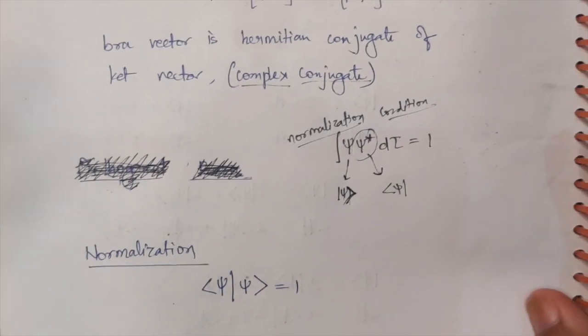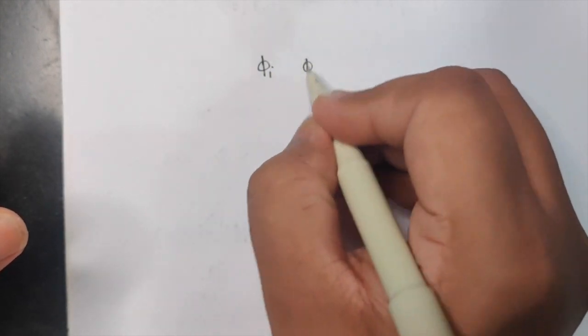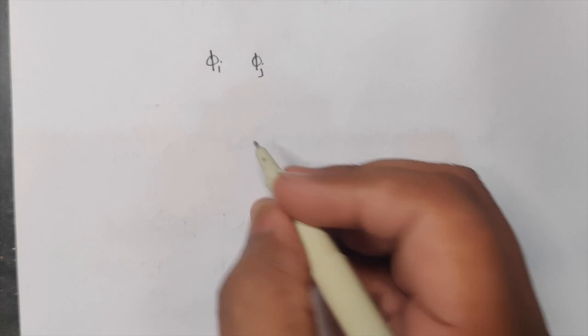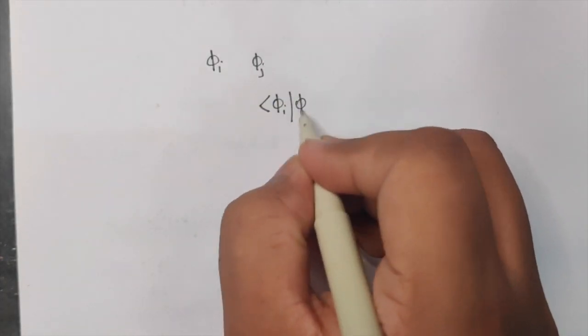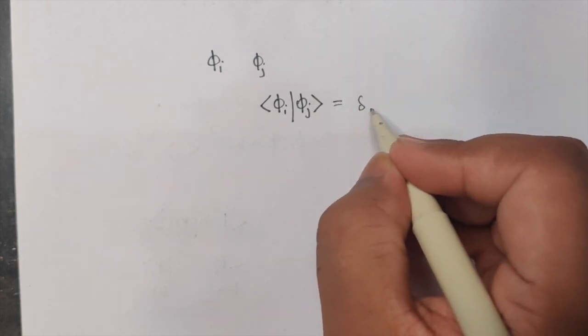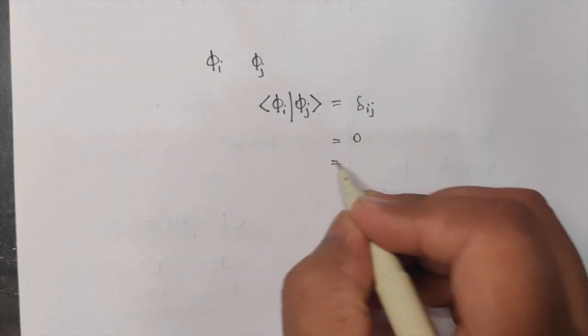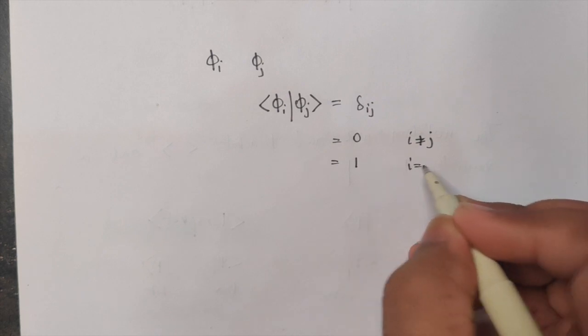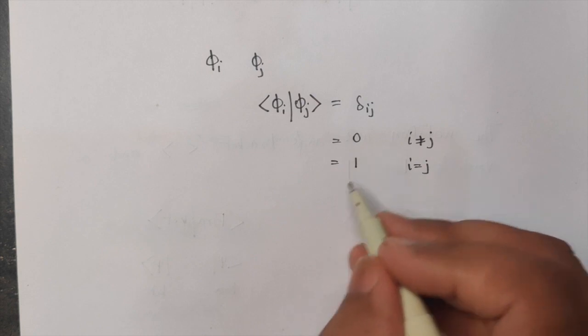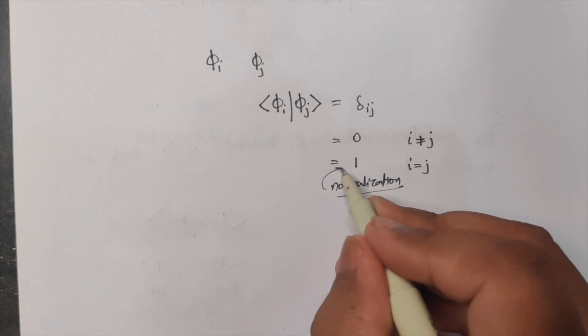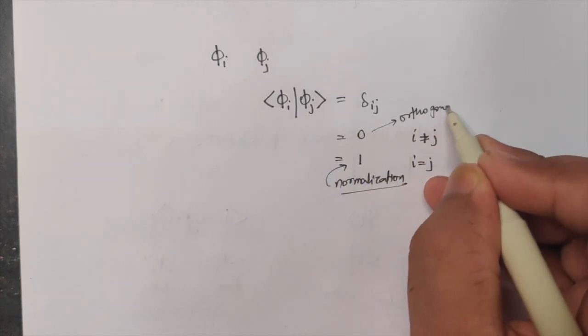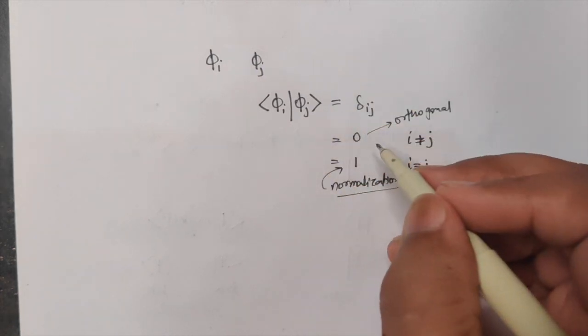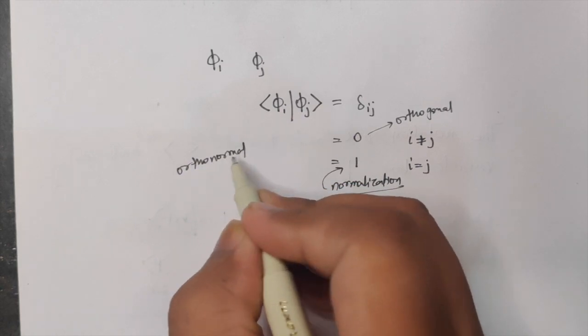There are also orthonormal conditions. Let's take two wave functions phi-i and phi-j. If they belong to the same Hilbert space and you want to express them in the form of an orthonormal set: bra-phi-i ket-phi-j equals the Kronecker delta, delta-ij. This is equal to zero if i is not equal to j — that's the orthogonality condition — and equal to one if i equals j — that's the normalization condition. Combined, both are called the orthonormal condition.